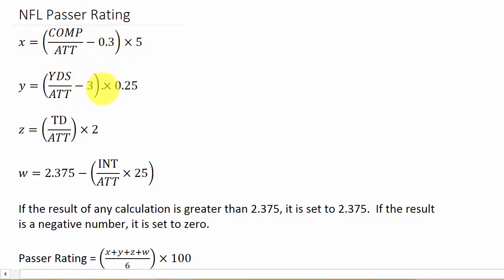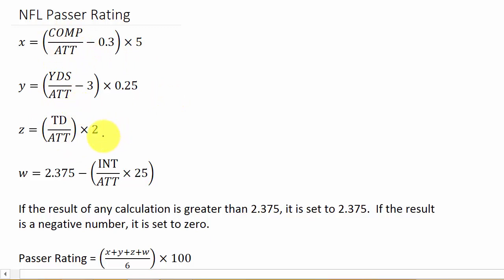I'll do a calculation based on some stats, and then we'll go over how to set up a spreadsheet. I've got a spreadsheet set up and I'll have the link in the description - all you have to do is input the stats and the spreadsheet calculates it for you. Next we have Z, which is your percentage of touchdown passes.